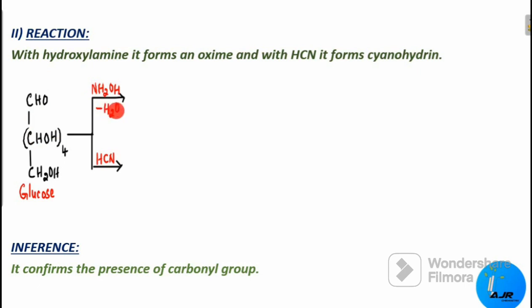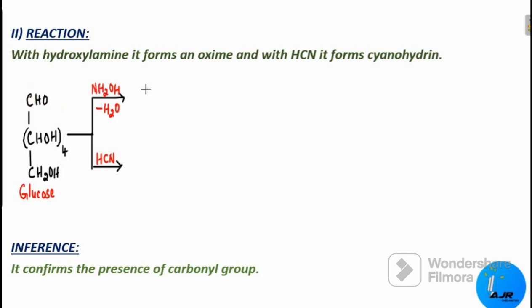Next reaction: when glucose is treated with hydroxylamine, it forms an oxime, and with HCN it forms a cyanohydrate. These are characteristic reactions of carbonyl compounds. The aldehyde group reacts with hydroxylamine — a water molecule is removed — to give the oxime product: CH=NOH–(CHOH)4–CH2OH.